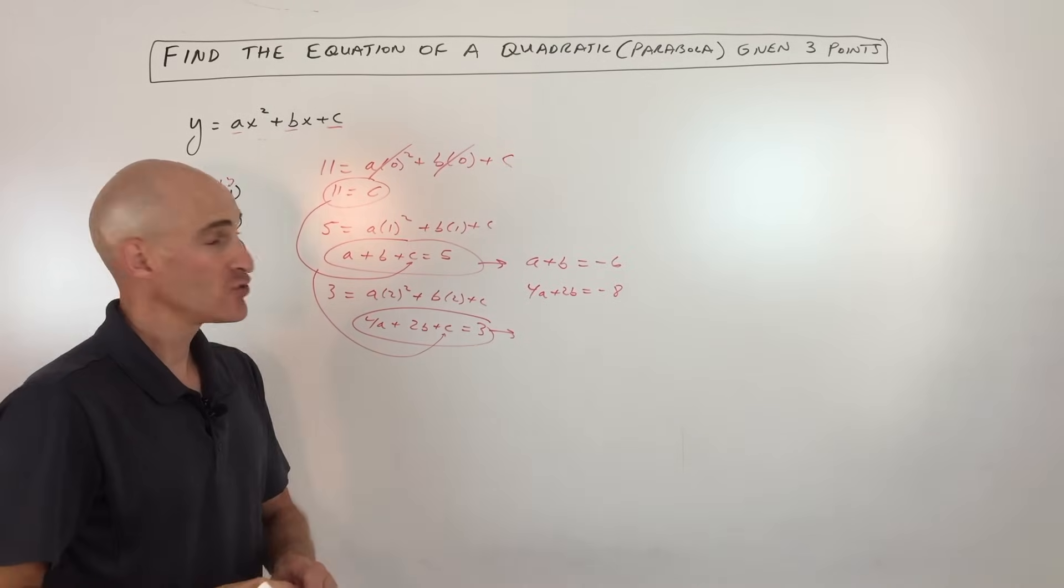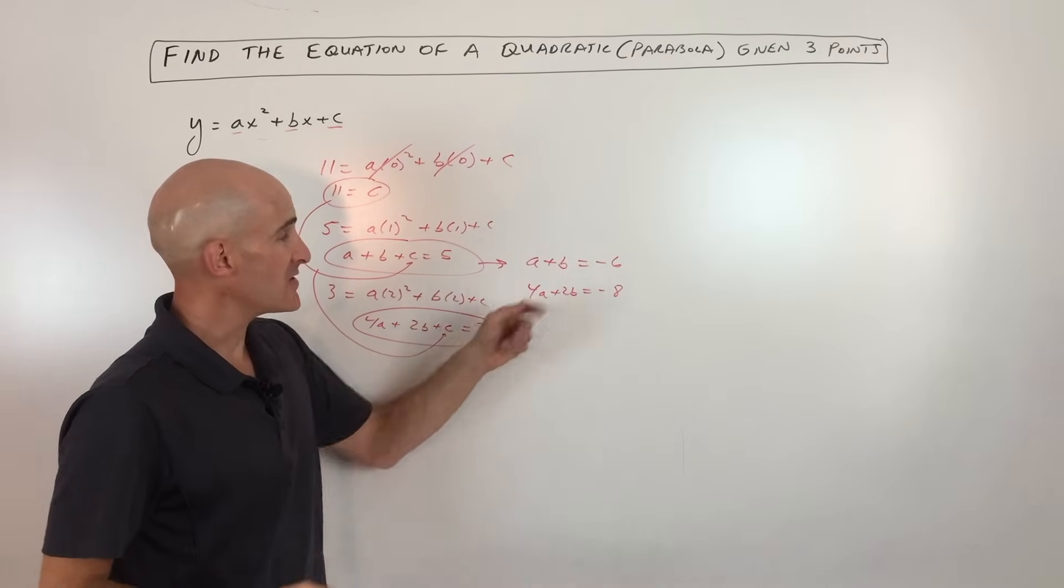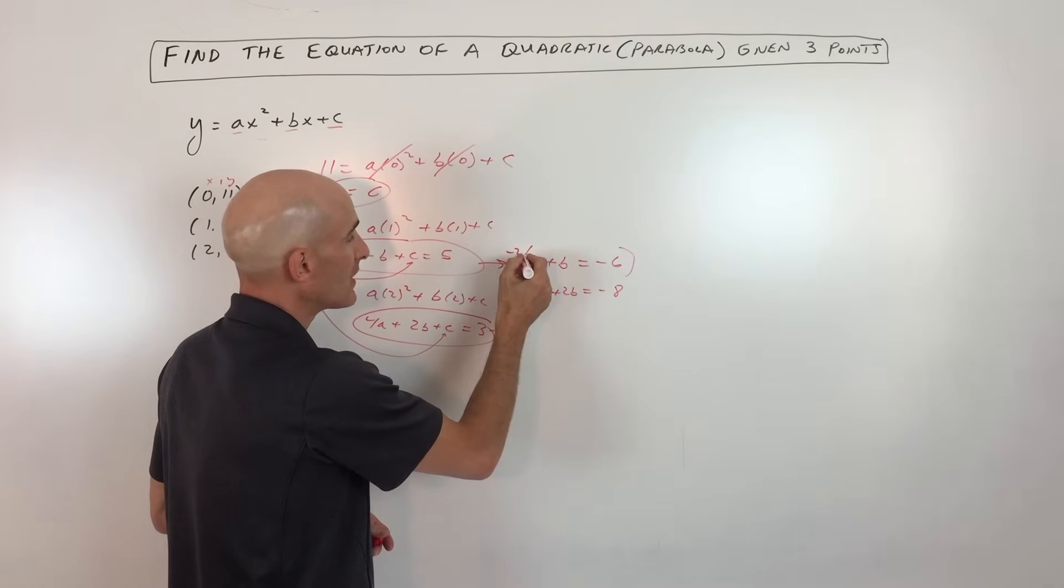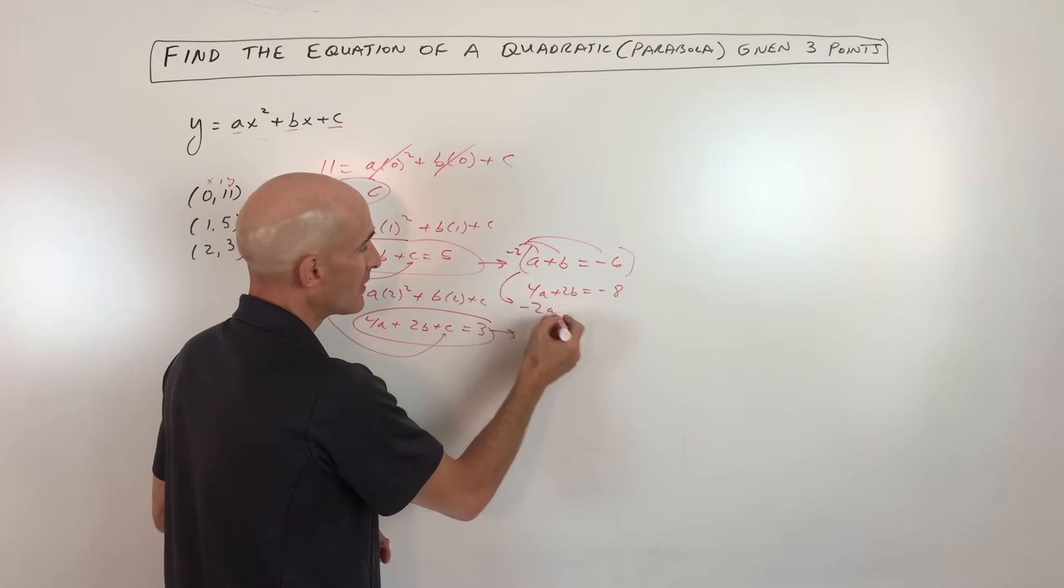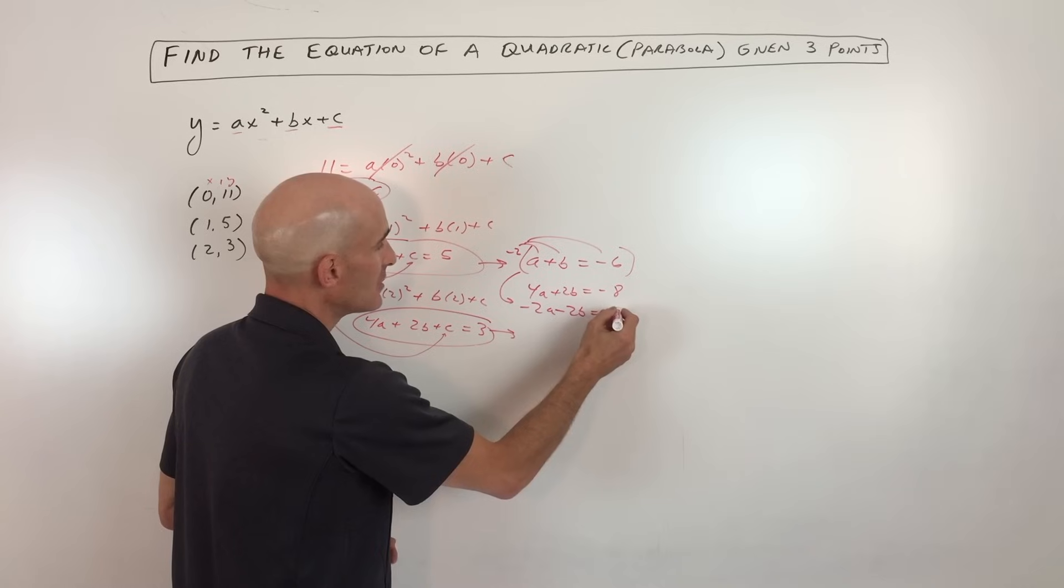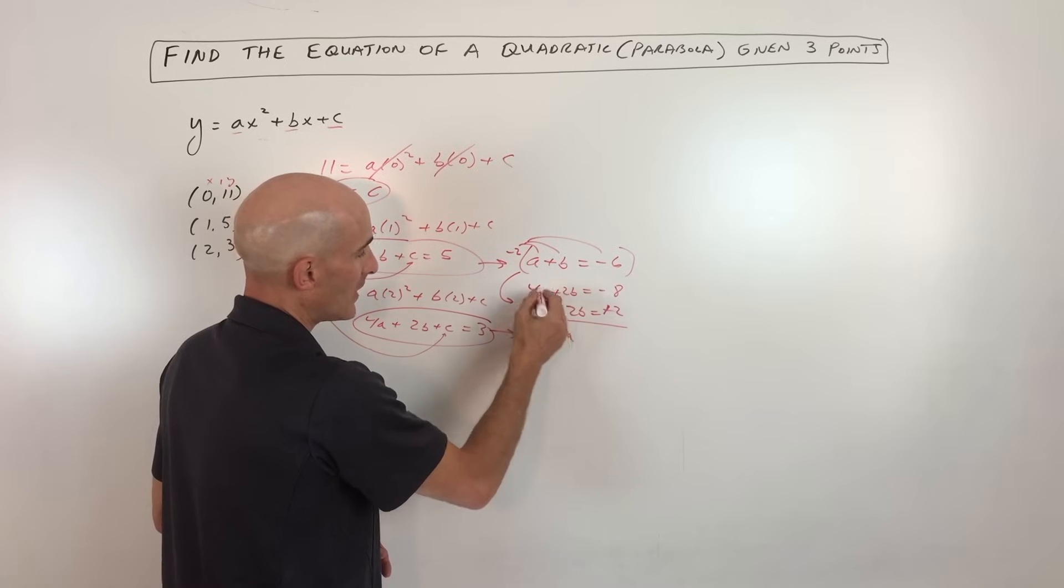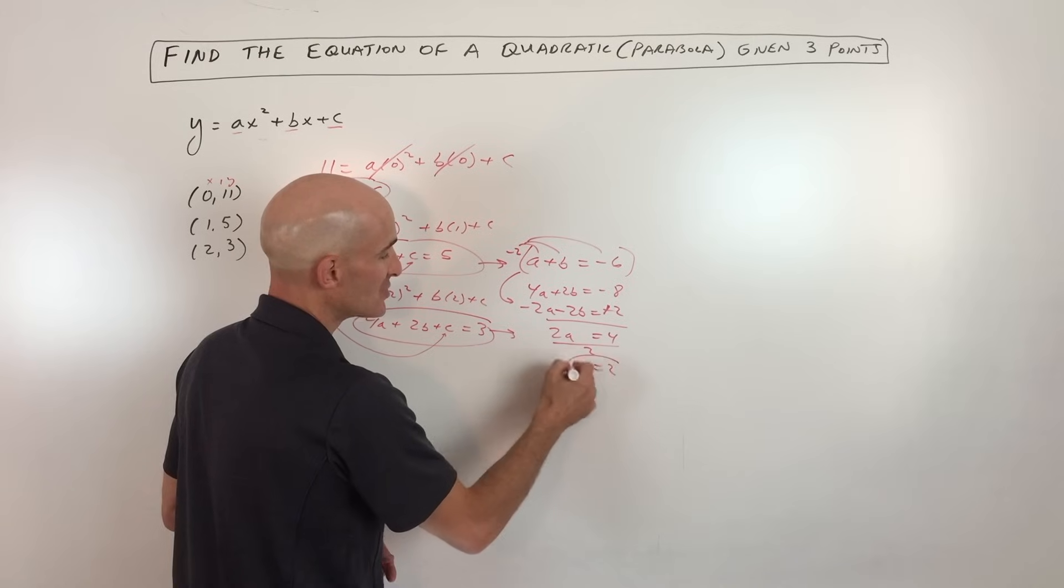So now we're down to two equations and two variables. So let's say we want to eliminate the b's. Let's multiply this entire equation by negative 2. And if we distribute, we're going to get negative 2a minus 2b equals positive 12. So if we add these together, you get 2a. The b's cancel. And we get 4. And if we divide by 2, you can see that a equals 2.